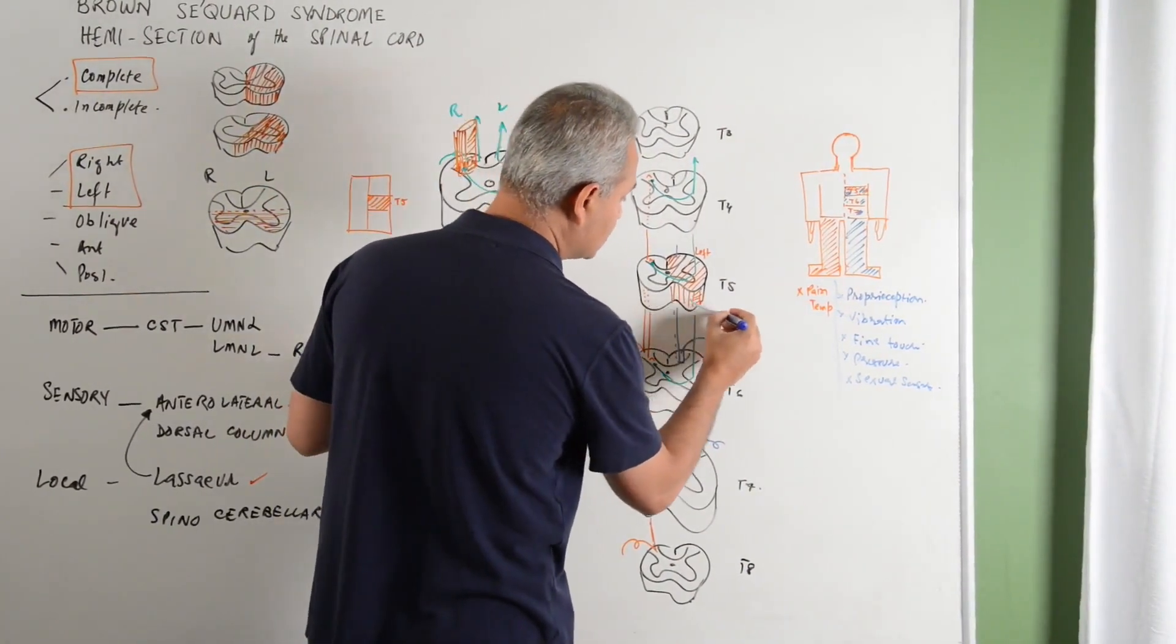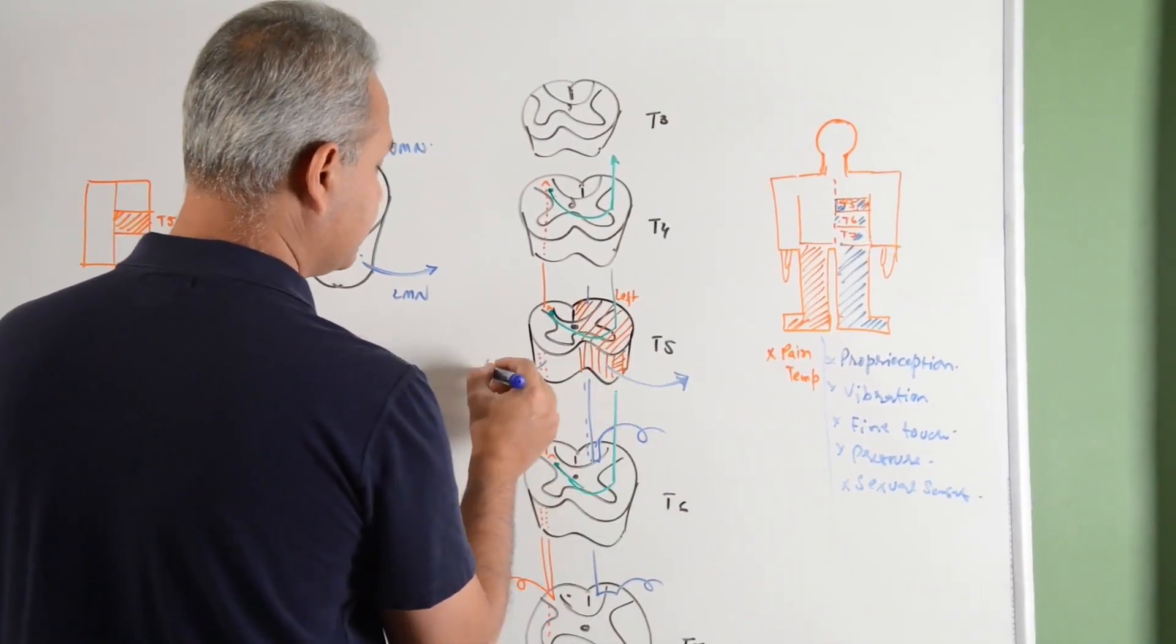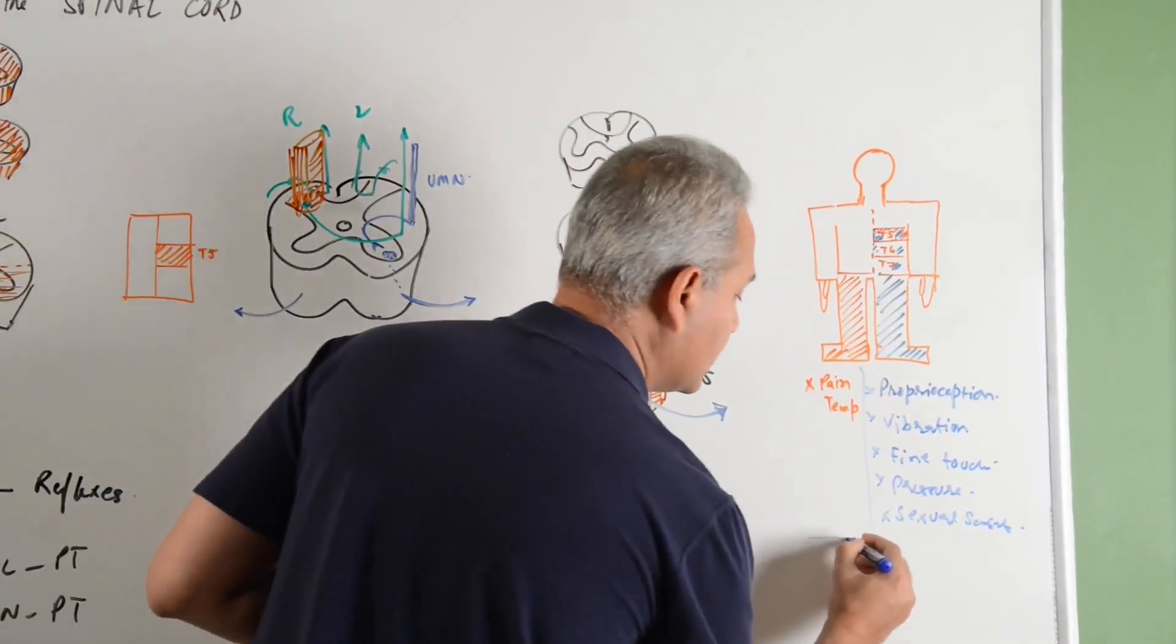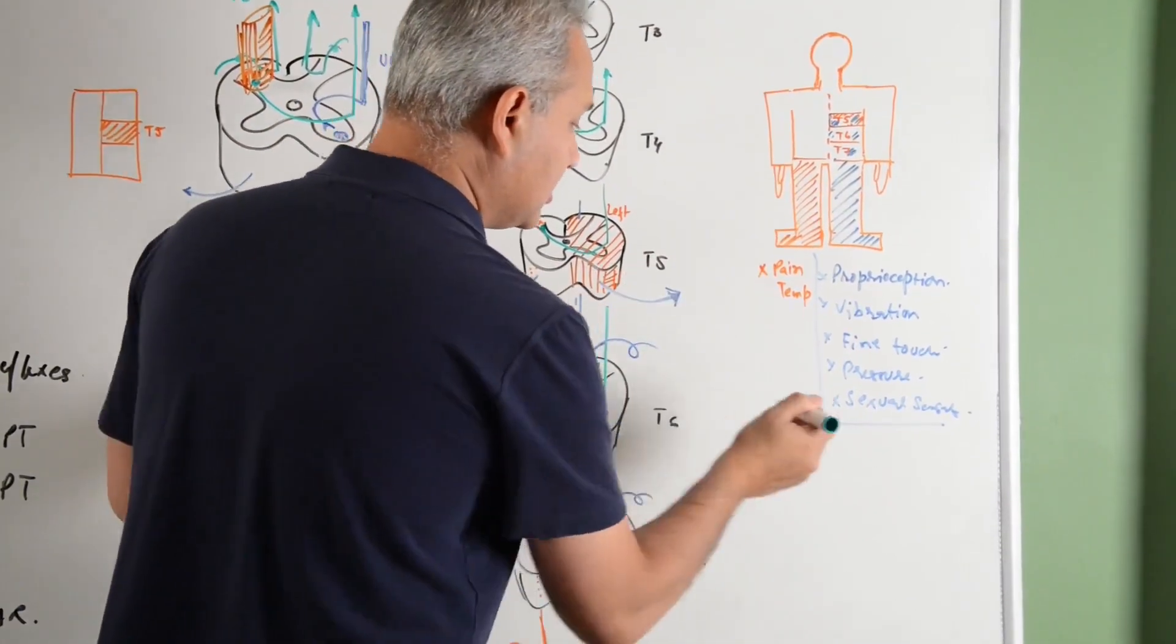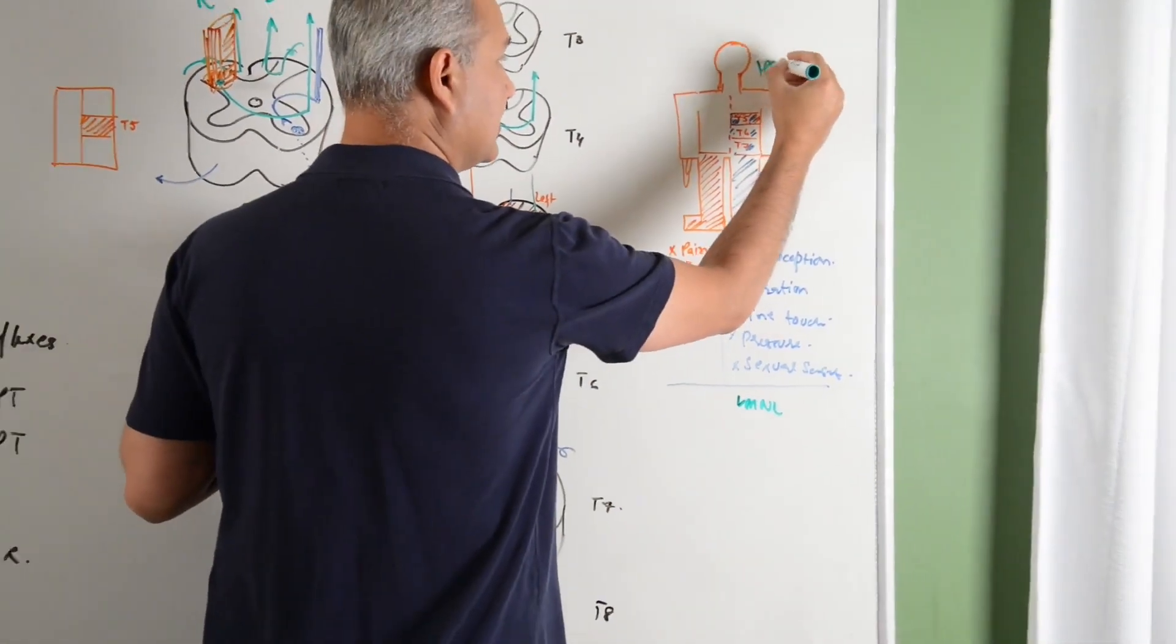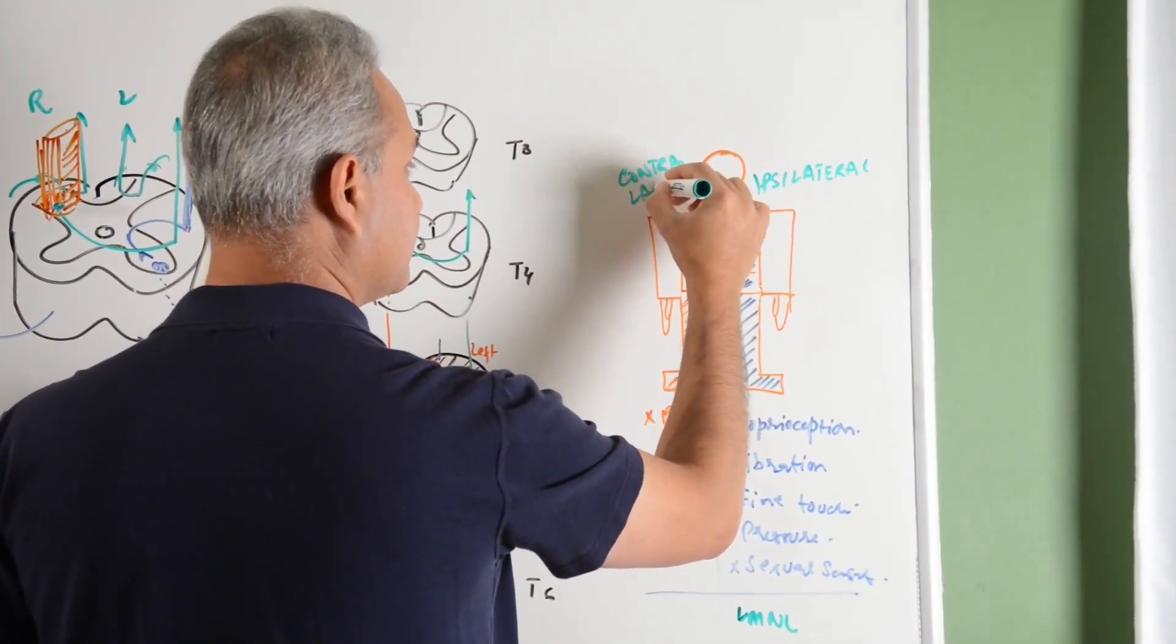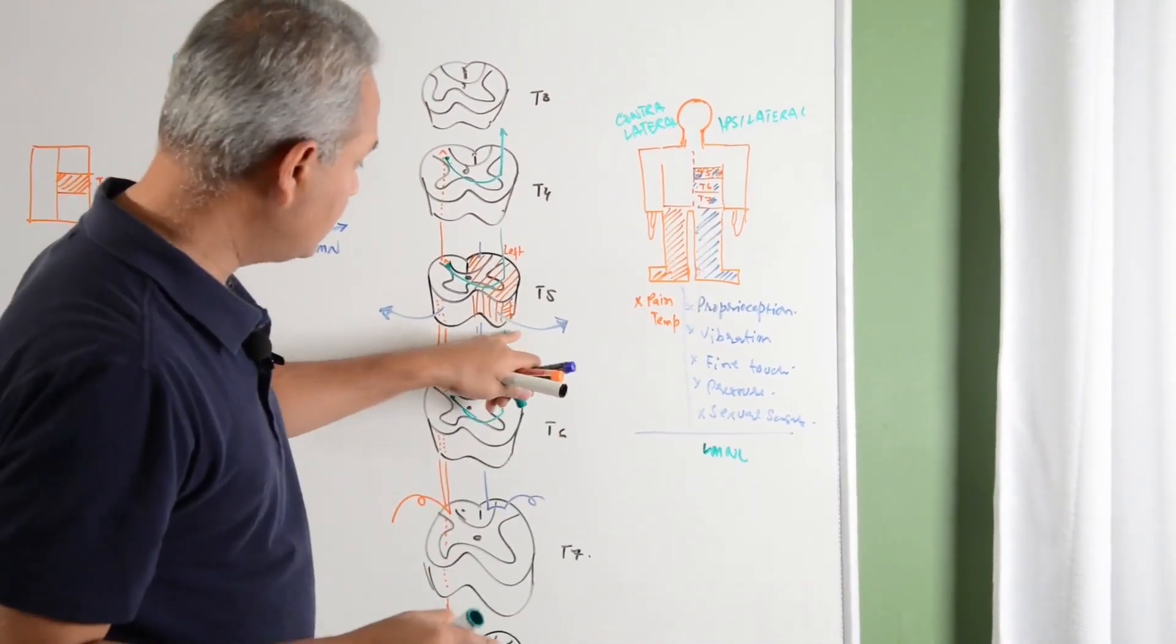This is the lower motor neuron. This lower motor neuron at the T5 has become destroyed. At the T5, at the section of the motor system, there is a lower motor neuron lesion on the same side ipsilateral. This is ipsilateral same side and this is contralateral or the other side. Same side lower motor neuron lesion, because the lower motor neuron is gone.